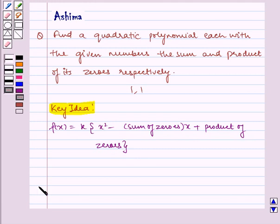Let us write our solution. We know that sum of zeros is given as 1 and product of zeros is given as 1.